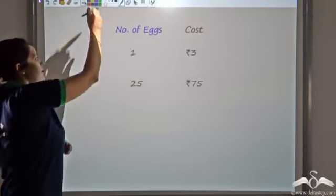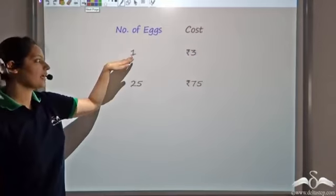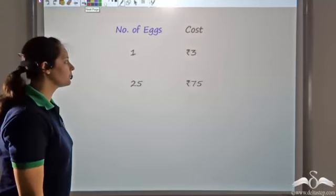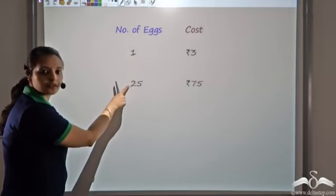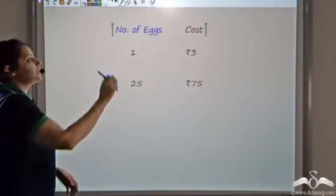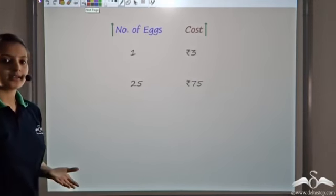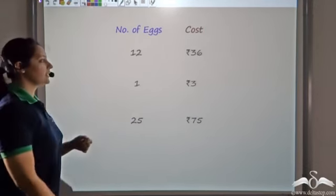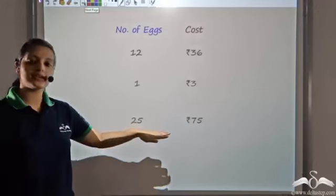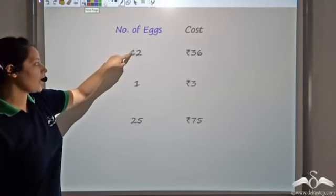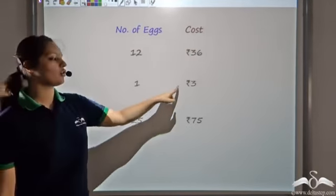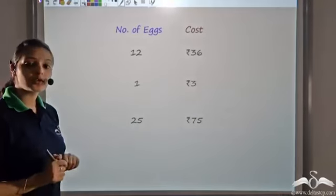Now let's see the number of eggs and cost together. One egg was for 3 rupees and 25 eggs is for 75 rupees. As the number of eggs increases, the cost is also increasing. And we also saw that as the number of eggs were decreasing, the cost was decreasing. So: 12 eggs cost 36 rupees, 1 egg is 3 rupees, and 25 eggs is 75 rupees.